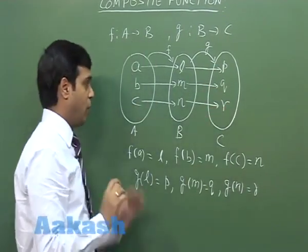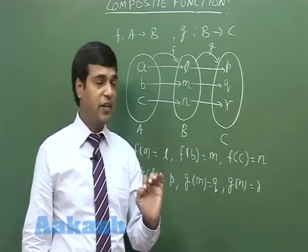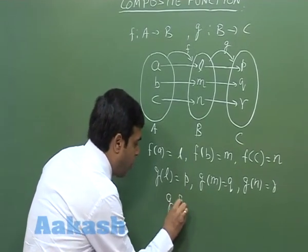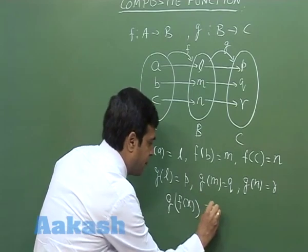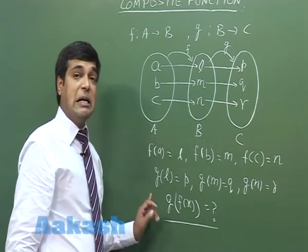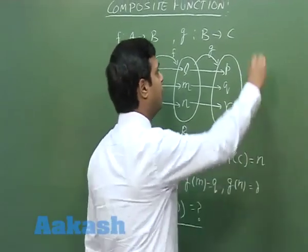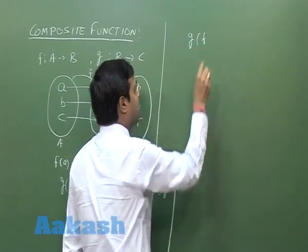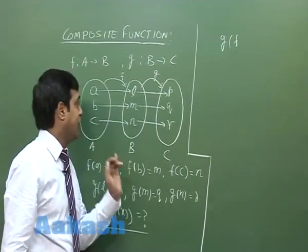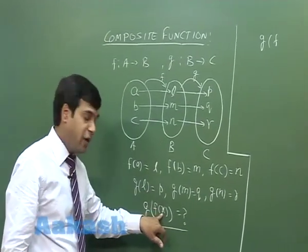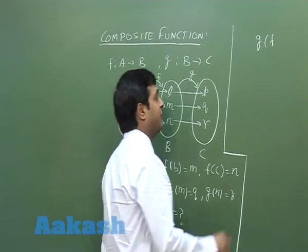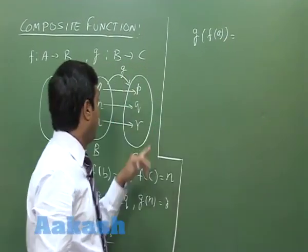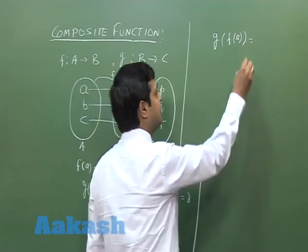Now we are trying to define a composite function from set A to set C. Consider the term g(f(x)). When we substitute the first element of set A, that is 'a', in place of x, we get f(a). So let's write g(f(a)). We know f(a) is defined as l, so we write g(l).